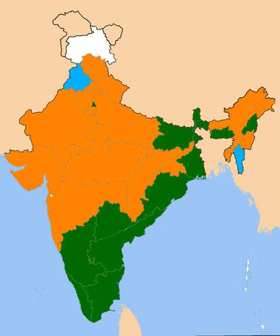Of the 30 incumbents, two are women — Mamata Banerjee in West Bengal. Serving since December 1994 for 24 years, three days, Sikkim's Pawan Kumar Chamling has the longest incumbency. Amirinder Singh of Punjab is the oldest chief minister, while Arunachal Pradesh's Pema Khandu is the youngest.